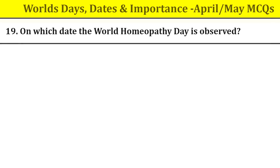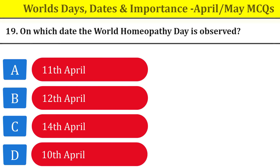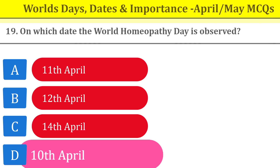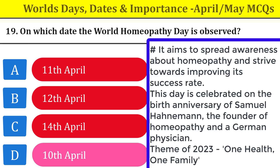Question number nineteen: on which date is World Homeopathy Day observed? World Homeopathy Day is observed on 10th April. It aims to spread awareness about homeopathy and strive towards improving its success rate. This day is celebrated on the birth anniversary of Samuel Hahnemann, the founder of homeopathy and a German physician. The theme of 2023 is 'One Health, One Family.'